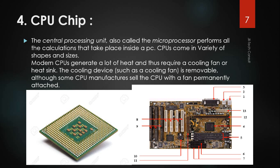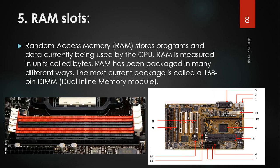The CPU is the Central Processing Unit and it is the brain of the computer. Now we have the RAM slot. RAM stands for Random Access Memory. The Random Access Memory stores programs and data currently being used by the CPU. The RAM is measured in units called bytes. RAM has been packaged in many different ways. In the PC, this is where we put the RAM — you put the RAM inside then you close it.